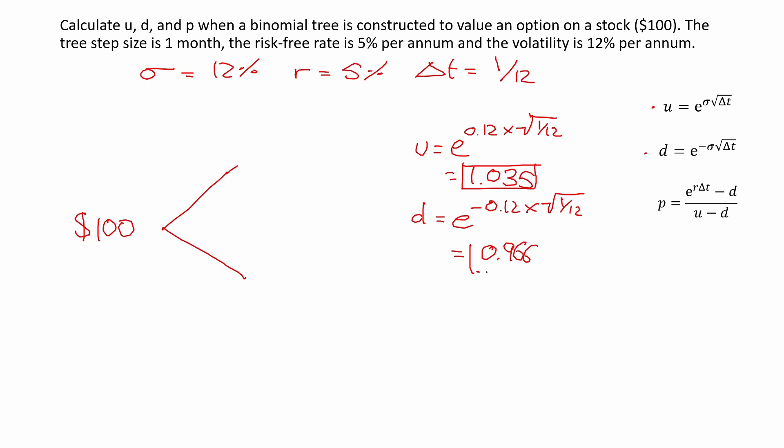So these are the values for u and d. If we were to calculate the stock prices for when it rises in the high state, we would do $100 times u, which is 1.035, which would give us $103.50.